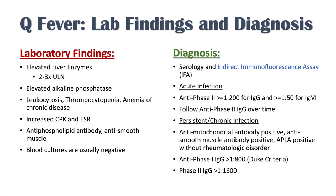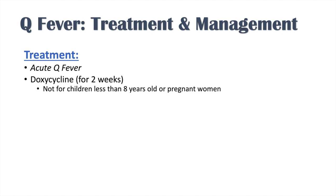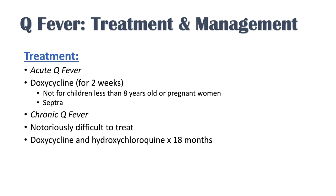Phase 2 IgG is usually greater than 1:1600. Treatment of acute Q fever uses the antibiotic doxycycline for two weeks. Doxycycline is not used for children less than 8 years old or pregnant women — in those cases we use Septra. For chronic Q fever, which is notoriously difficult to treat, we use doxycycline plus hydroxychloroquine for at least 18 months. If hydroxychloroquine cannot be tolerated, we use doxycycline plus a fluoroquinolone, but then treatment must continue for three to four years.